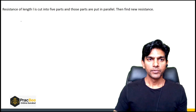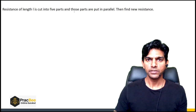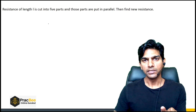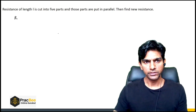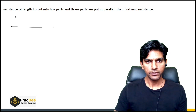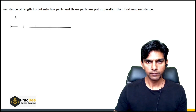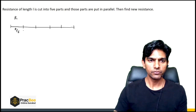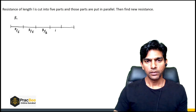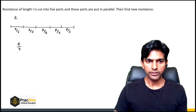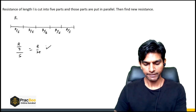Next: a resistance of length l is cut into five equal parts and those parts are connected in parallel. If the total resistance of the wire is R, each part has resistance R/5 since resistance is proportional to length for a uniform wire. Connecting five such R/5 resistors in parallel gives a net resistance of (R/5)/5 = R/25.